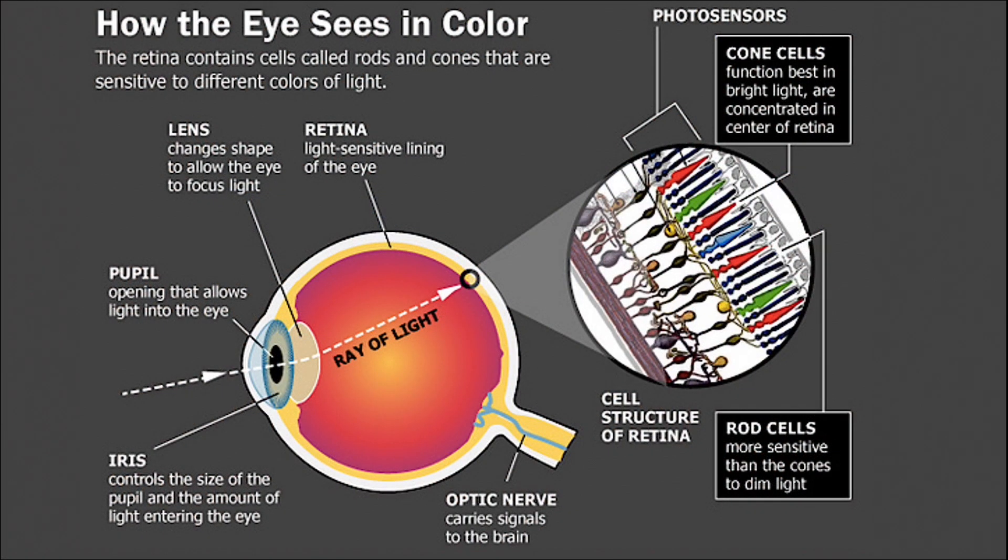Our eyes are incredibly complex parts of our bodies. The incoming light is bent through the lens of the eye as it travels to the retina at the back of the eyeball. The retina is a thin, light-sensitive lining that contains all the photoreceptor cells that register the light that comes into the eye. There are two types of photoreceptor cells: rods and cones.